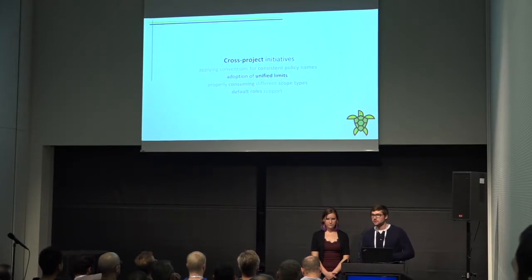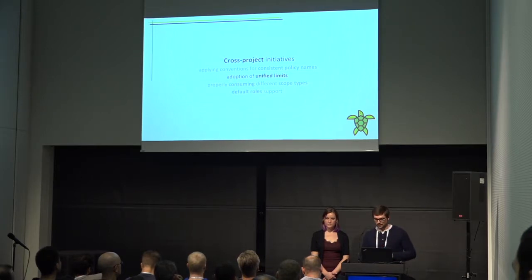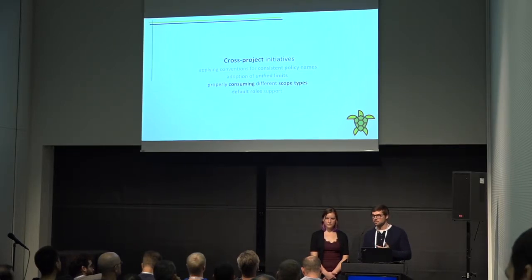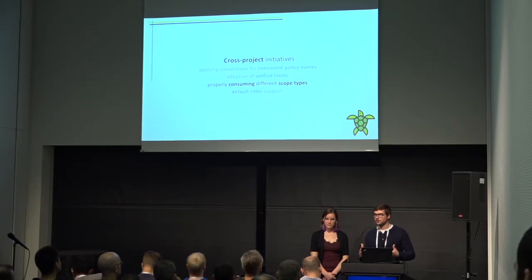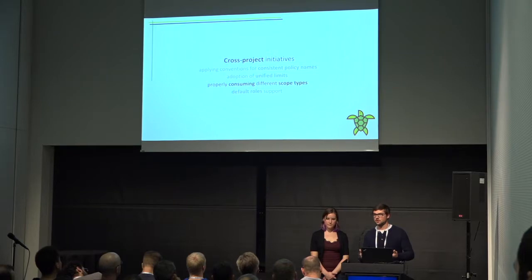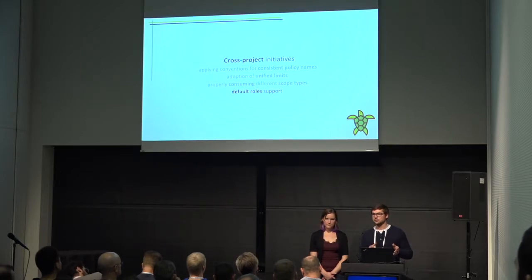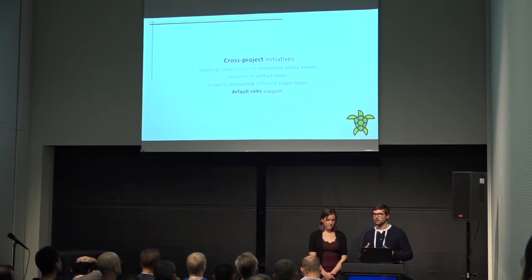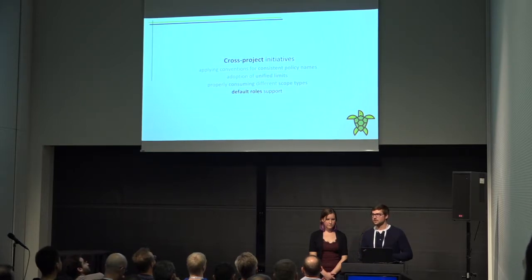We're also continuing to push the adoption of Unified Limits — right now working closely with Nova specifically to get a few of their resources into Keystone by the end of Stein. We're taking a similar approach to educating around scope types: system scope, domain scope, and project scope, and how those scopes can help services better protect their APIs and allow more granularity. Going hand in hand with that is better default role support. Because we have those roles from Rocky, we can start transitioning our default policies to consuming them, giving you a read-only role out of the box without needing to override a bunch of policies.